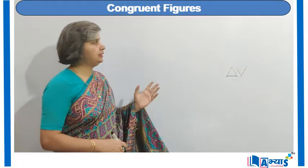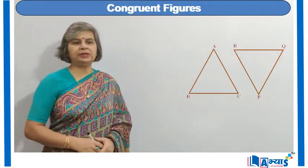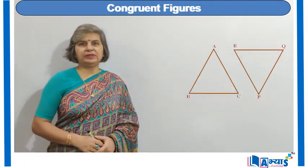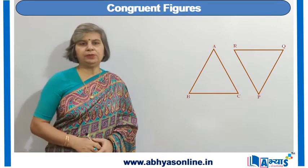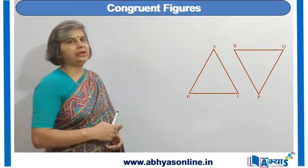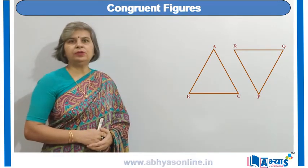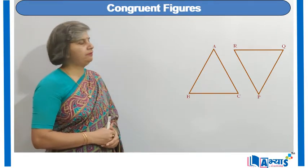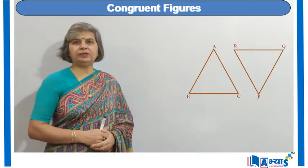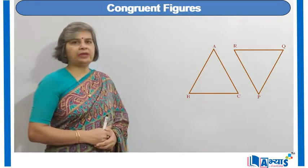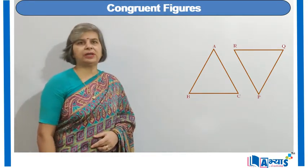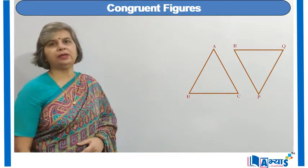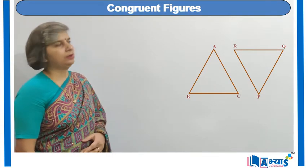As you can see in the figure, we have two triangles — triangle ABC and triangle PQR. Suppose we cut PQR and try to rotate and place it: P will overlap with A, Q will overlap with B, and R will overlap with C. So, triangle ABC is congruent to triangle PQR.